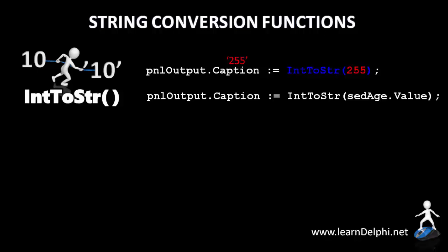The value of a SpinEdit is also a number — in other words an integer. Let's assume we have a SpinEdit named SEDH and the value in SEDH is 16. This statement takes the value in the SpinEdit and passes it to the input parameter of the IntToString function. The function will then convert the number 16 and return it as a string value to be displayed as the caption of a panel.